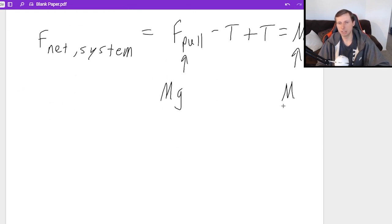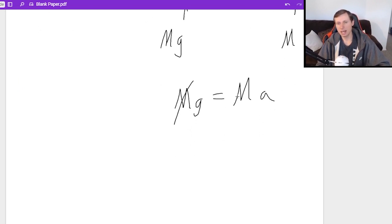These T's cancel. We get MG equals MA. The M's cancel. It looks like the acceleration is G, just G, for scenario B.